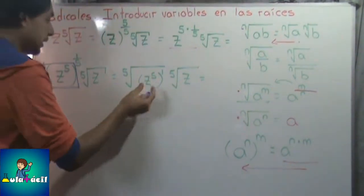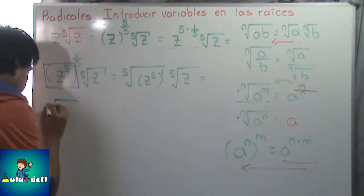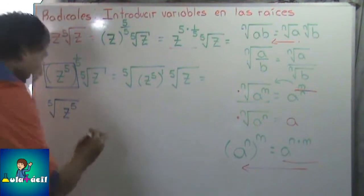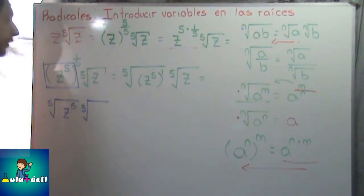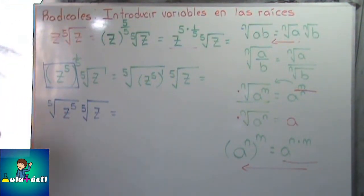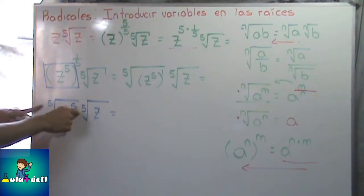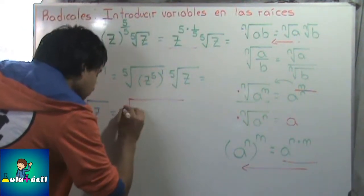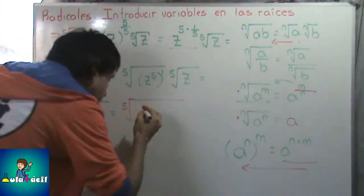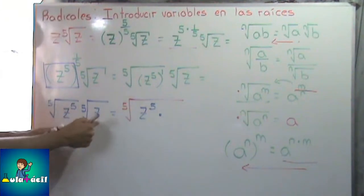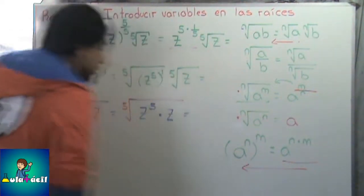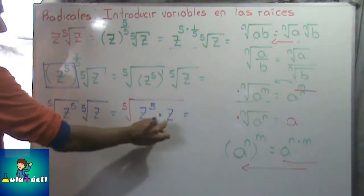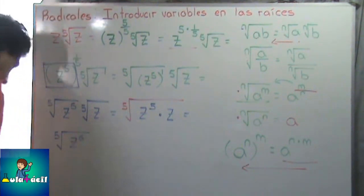Simplificamos lo que tenemos adentro de la raíz: raíz quinta, potencia elevada a otra potencia nos da Z — multiplicamos los exponentes: 5 por 1 nos da 5 — y raíz quinta de Z. Ahora tenemos dos raíces que tienen el mismo índice que se están multiplicando, las podemos juntar adentro de una sola raíz: raíz quinta de Z a la 5 por Z. Z a la 5 por Z nos da Z a la 6, y ya tenemos el resultado.